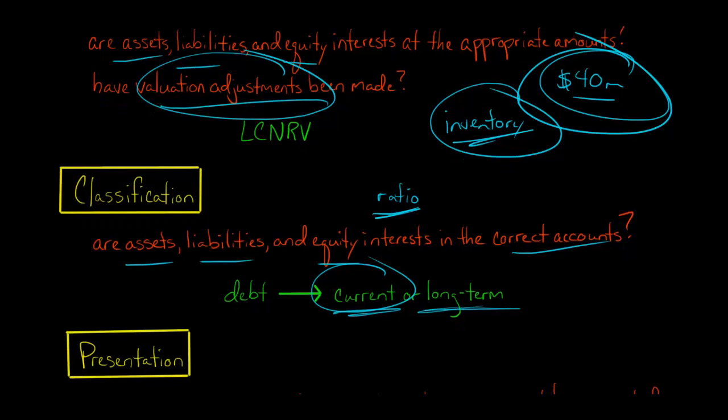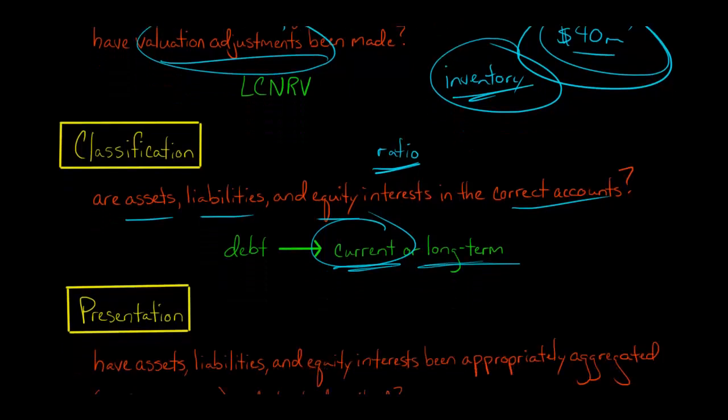So classification, when management puts something in a current liability, you're assuming this is going to come due within one year, the length of the operating cycle, whichever is longer. And it's the auditor's job to go and say, let's test this assertion and see if that's actually true.